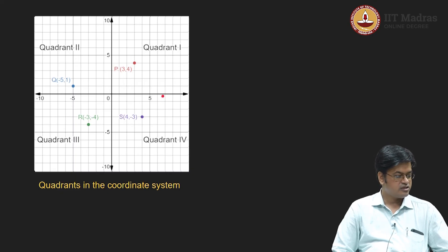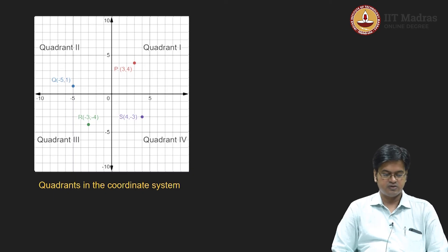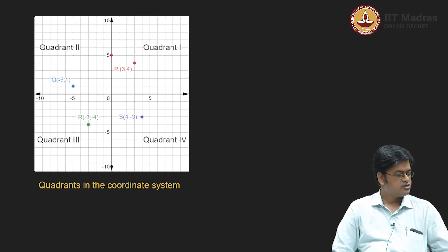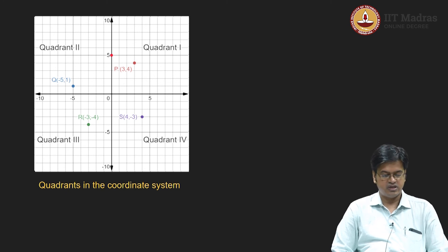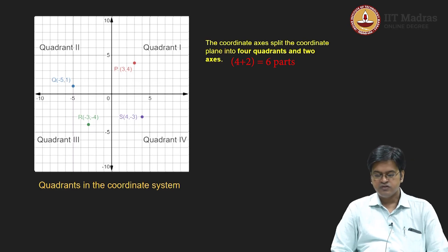A question may arise: if I have the point 5 comma 0, in which quadrant does this point lie? The answer is this point does not lie in any quadrant — this point lies on the x-axis. Similarly, the point 0 comma 5 does not lie on any quadrant, but lies on the y-axis. So based on this understanding, a coordinate plane is subdivided into 4 quadrants and 2 axes.